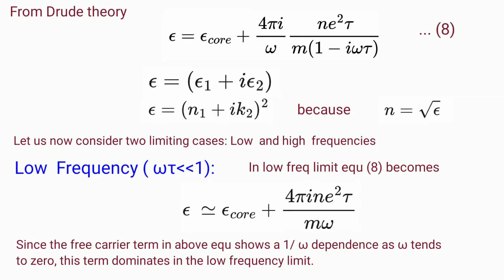That is ε = ε_core + 4πi/ω × ne²τ/m(1-iωτ). It can be written as ε = ε₁ + iε₂. Because refractive index is the square root of dielectric constant, ε = (n₁ + ik₂)².